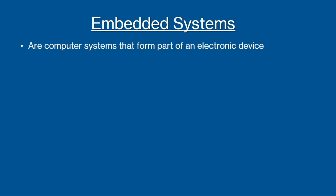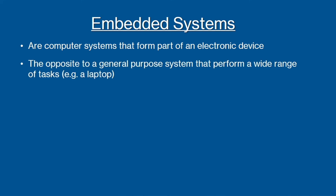Now let's have a look at embedded systems. An embedded system is a computer system that forms part of an electronic device, and it can be a dedicated or a control system. Although they can form part of one, embedded systems are very different from general purpose systems such as laptops and tablets, which are programmed to perform a wide range of tasks.